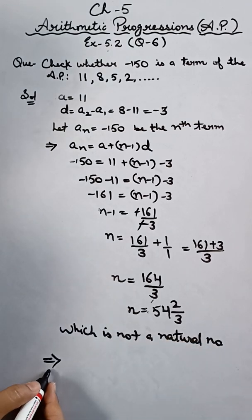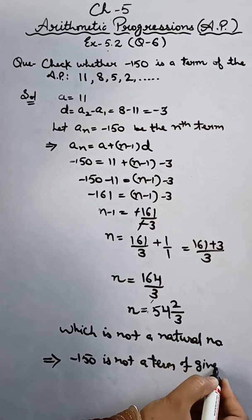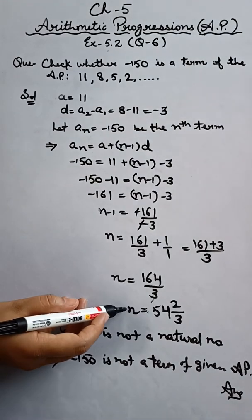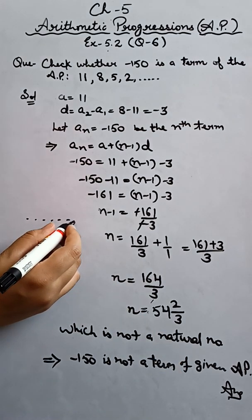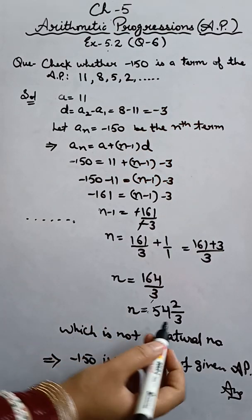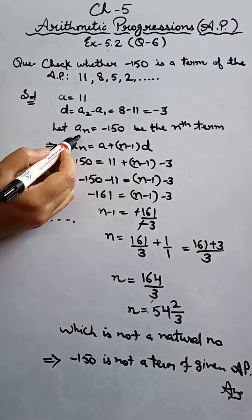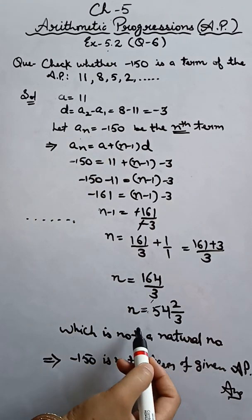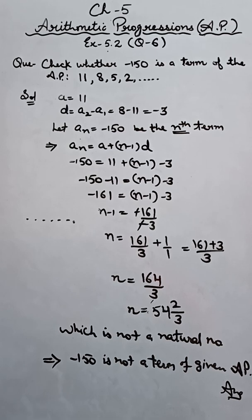Therefore, or which implies, hence minus 150 is not a term of the given AP. This is what we needed to check, whether it's a term or not. 54 and 2/3 is obviously not a natural number, so in any AP, minus 150 is not a term of that given AP. I hope this question is clear to you students. Thank you so much for watching the video. Kindly share and like, also subscribe to the channel and press the bell icon. Thank you.